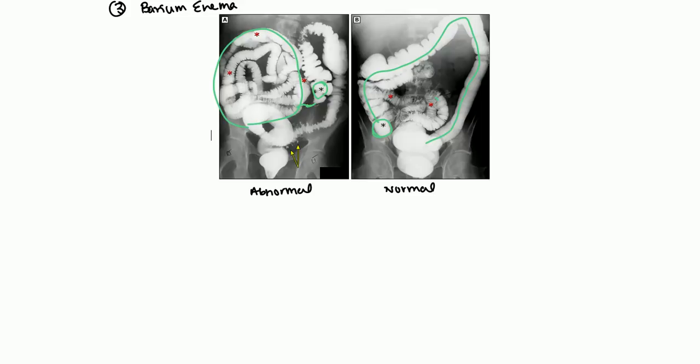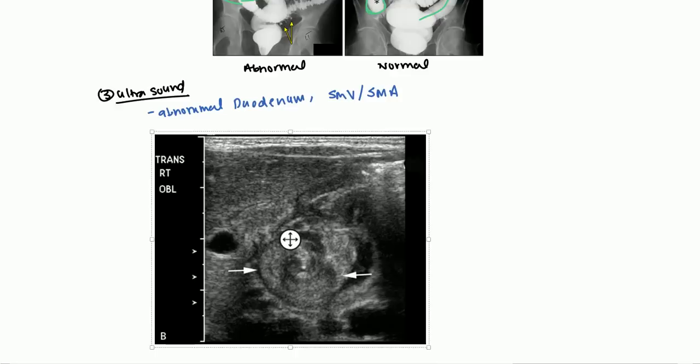What you can also do is an ultrasound. Ultrasound generally will show you abnormal placement of the duodenum. So the duodenum is not where it's supposed to be. And you can also get abnormal placement of the superior mesenteric vein and the superior mesenteric artery. So sometimes one will be anterior lateral to the other. And so that is going to be your classical picture there.